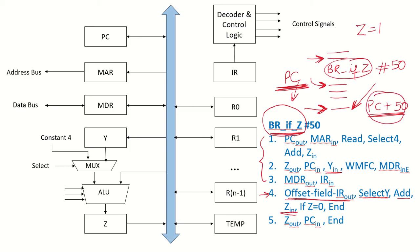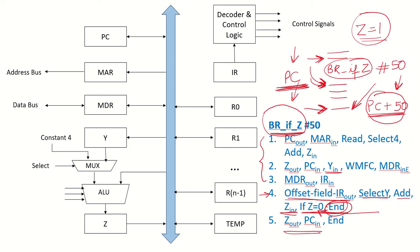We have computed the target address in Z but have not yet updated PC with this value. Now we check the flag in the same clock cycle. If Z flag is 0 — meaning the flag is not high — we go to the next instruction only, and since PC already holds that address, we simply end here. But if Z flag is 1, we update the PC with the value in Z and go to the target address. This is how branch conditions are handled in a single bus processor.